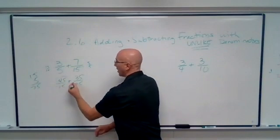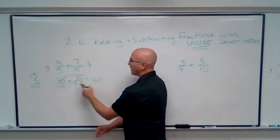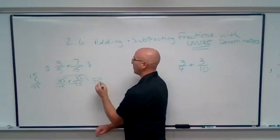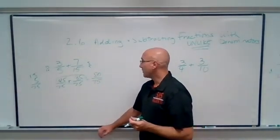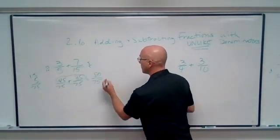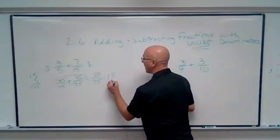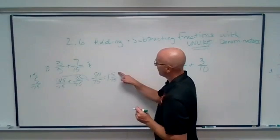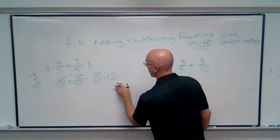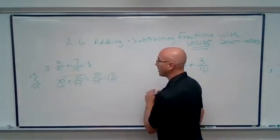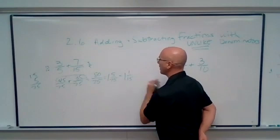Now we can add straight across. We're going to get something over 75. 45 and 35 is 80. 80 over 75 is an improper fraction, so we might want to write that as one and 5/75. But 5/75 is not reduced, so we want to simplify that. We can divide both the numerator and denominator by five and we get 1 and 1/15.